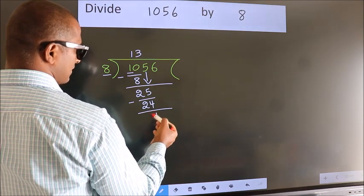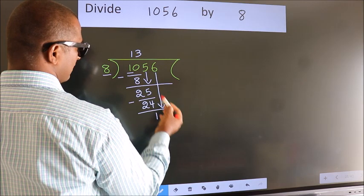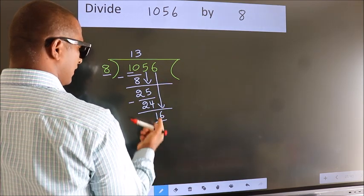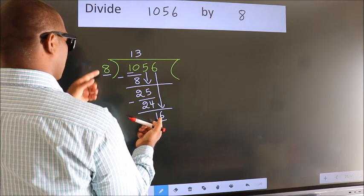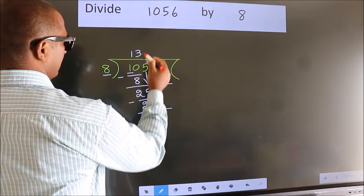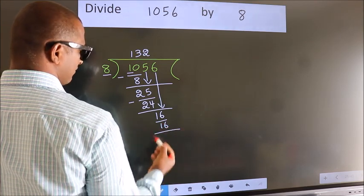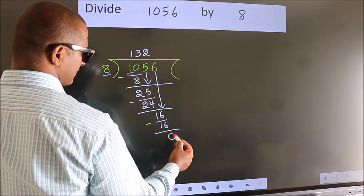After this, bring down the beside number. So, 6 down, giving us 16. When do we get 16 in the 8 table? 8 twos is 16. Now we subtract, and we get 0.